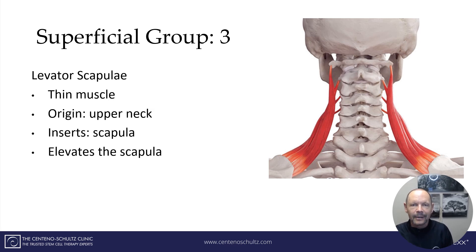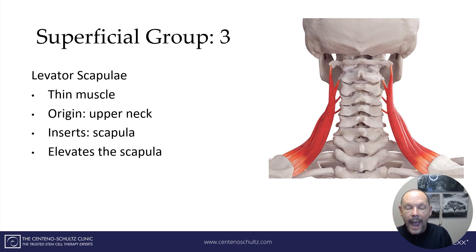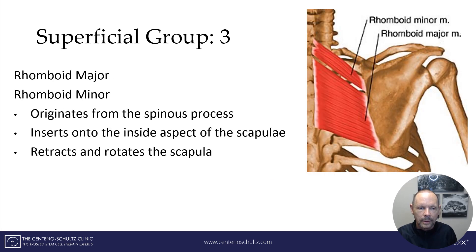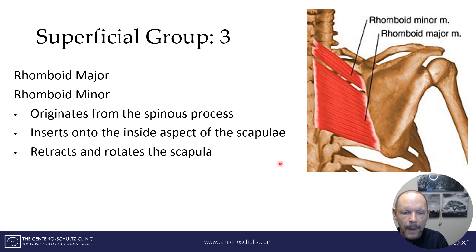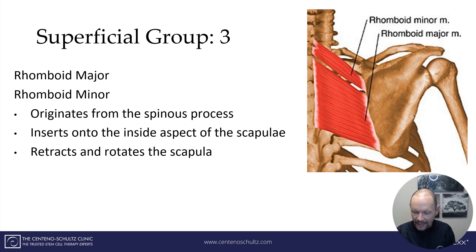The second muscle in the superficial group is the levator scapula. Unlike the trapezius, this is a rather thin muscle but also a very important one. It originates in the upper spine and inserts on the medial border of the scapula, and it elevates the scapula. Then there are the two rhomboid muscles — the rhomboid major and rhomboid minor — which originate from the spine, attach to the scapula, and their goal is to retract and rotate the scapula.